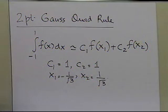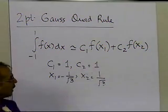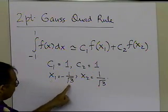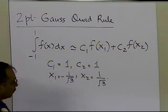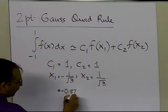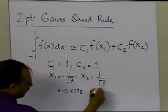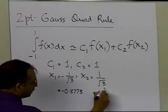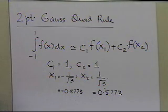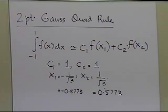We want to show that this is the form of the two-point Gauss Quadrature rule, where the weights c1 and c2 are both 1, and x1 and x2 equal those quantities. In handbooks, these are written as 0.5773 — negative for x1 and positive for x2 — which is just the decimal notation. Let's go ahead and derive this particular formula.